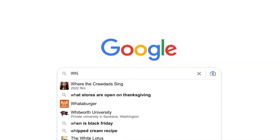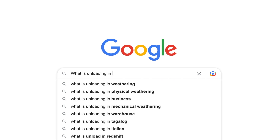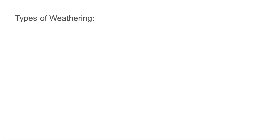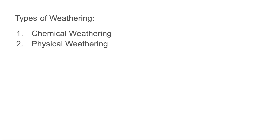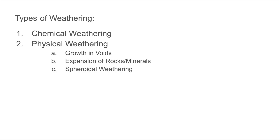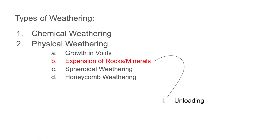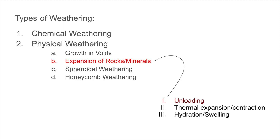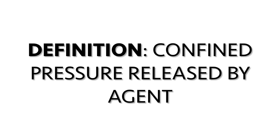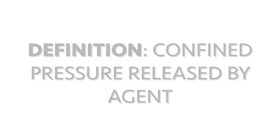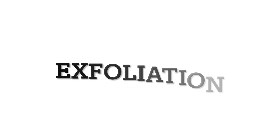Before expanding on and understanding the exfoliation process, we must first understand what unloading and weathering are. There are two types of weathering: chemical and physical. Physical weathering can occur in growth and void expansions of rocks and minerals, spherical weathering, and honeycomb weathering. Under the expansion of rocks and minerals lies unloading, thermal expansion and contraction, and hydration and swelling. The definition of unloading is confined pressure released by an agent — and the miners are the agents. Now let's expand on exfoliation.